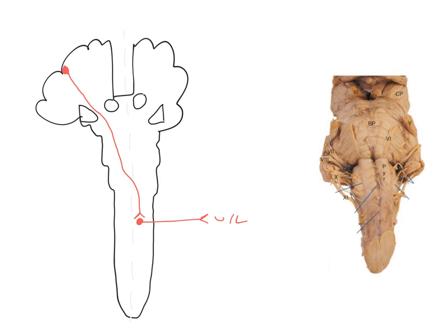Before we move on, let's review those structures in the course of the axon, looking at the image of the brain stem. The neuron starts off in the motor cortex, passes down through the corona radiata, then into the internal capsule which is found between the lentiform nucleus and the thalamus. From the internal capsule it enters the brain stem through the cerebral peduncle. Here's one cerebral peduncle and here is another one.